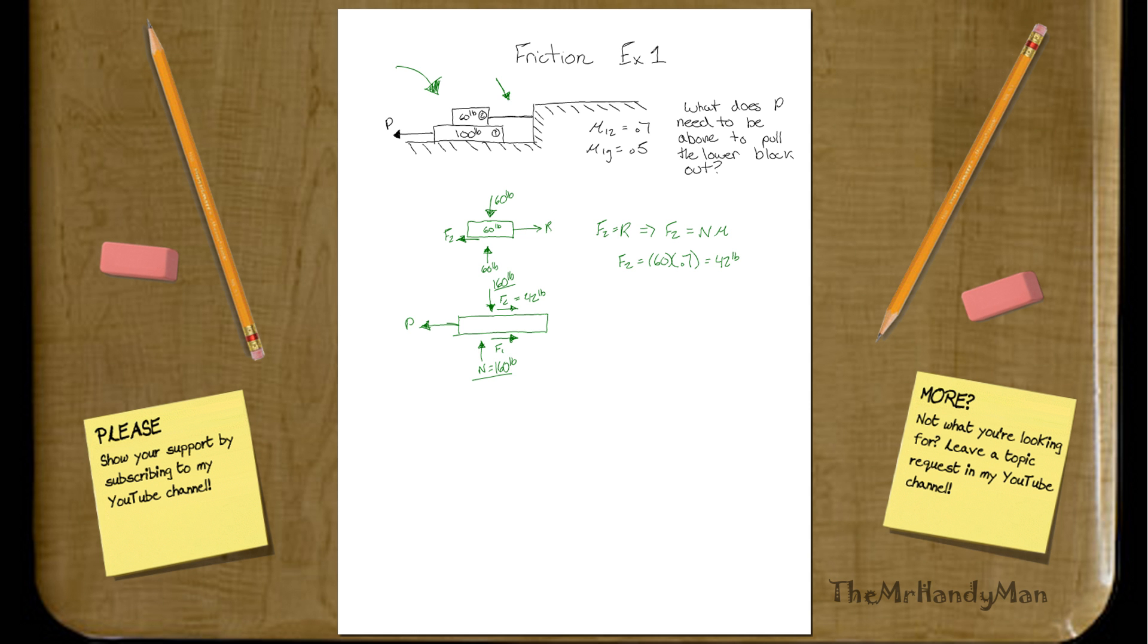Now that we know that, we know that force 1 is going to equal, once again, normal force times our friction factor, which is 160 pounds times 0.5. That will equal 80 pounds.